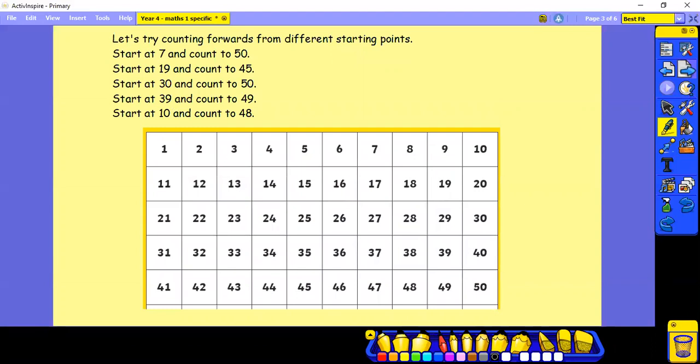So now that we've had a try at that, let's start counting forwards from different starting points. Start at 7 and count forwards to 50. Start at 19 and count to 45. Start at 30 and count to 50. Start at 39 and count to 49. Start at 10 and count to 48. And remember, put your finger on each number as you count. Keep practicing this until you feel confident.